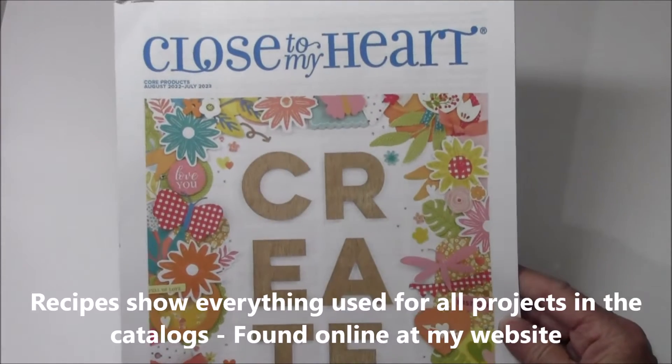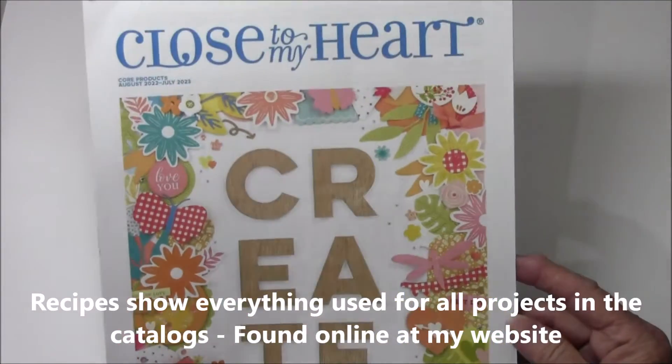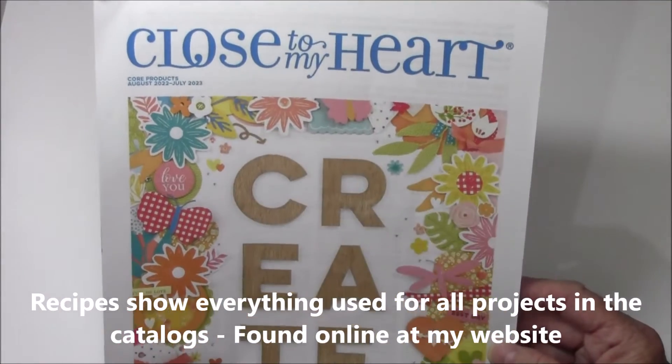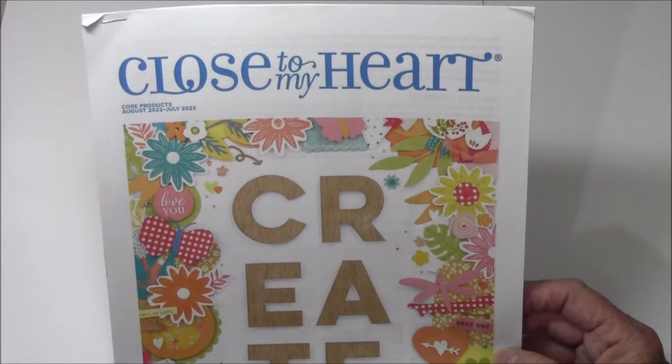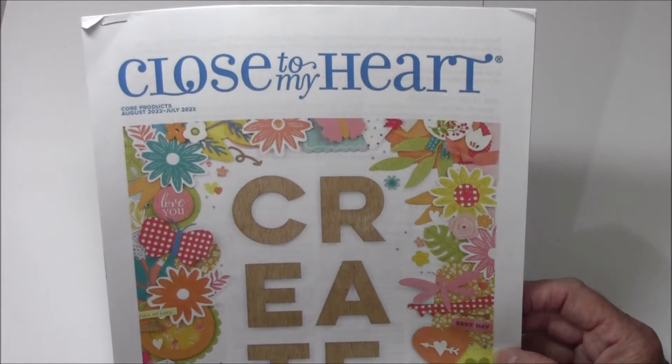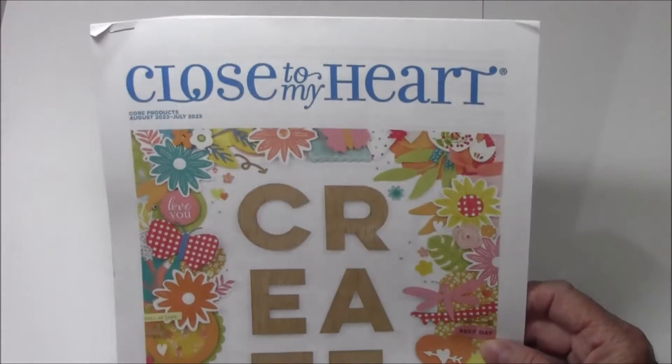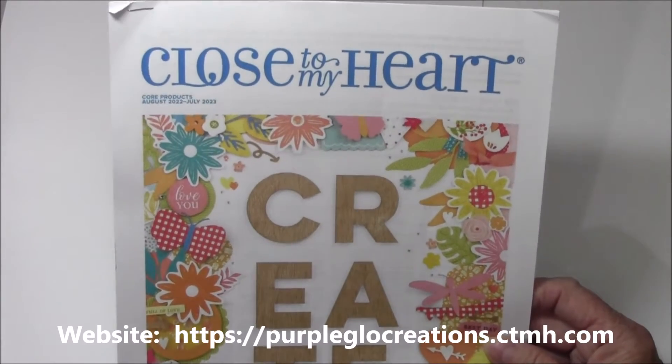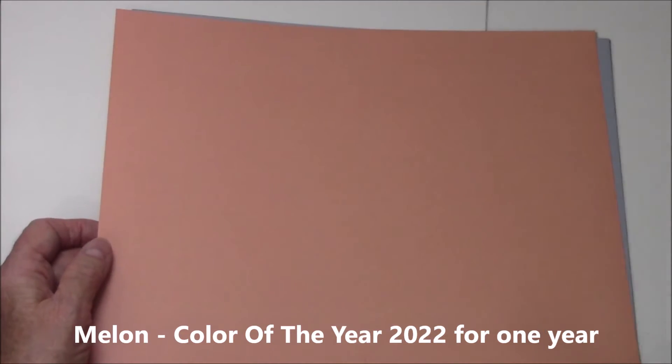One of the things that we have with the core catalog that you can get online is something called recipes. This is the little recipe section that I printed off the computer to show me what each page has in the catalog, so I can see what products they use and how to make it. We have six new colors for this next core catalog.